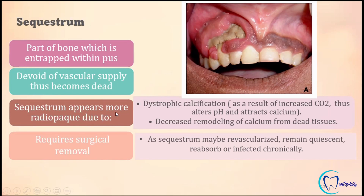Sequestrum appears more radiopaque because of the dystrophic calcification, meaning calcification in the tissue which has necrosis. Dystrophic calcification occurs as a result of increased carbon dioxide, thus altering the pH and attracting more calcium, and also because of the decreased remodeling of the calcium from the dead tissues.